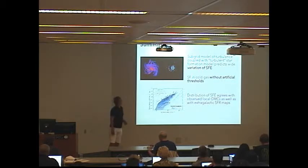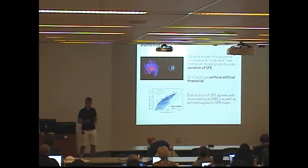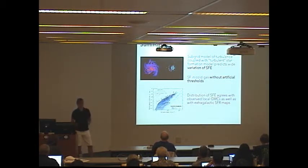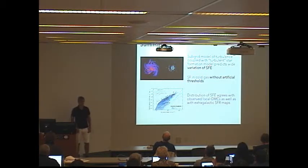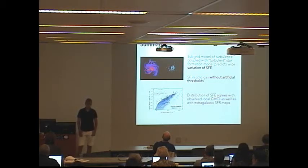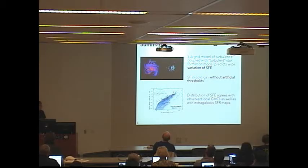Without any tuning, this model will predict correct normalization and overall trend. I think this is quite promising. I'll conclude with my summary. This turbulent model of star formation does predict variation of star formation efficiency. It produces natural threshold of temperature without any artificial threshold set by hand, and the overall distribution does agree with the observations. Thank you.